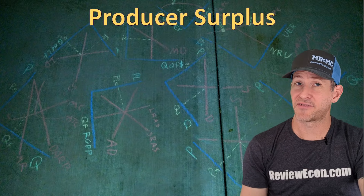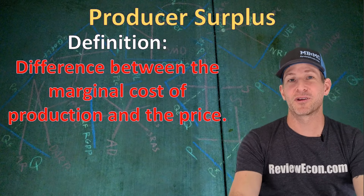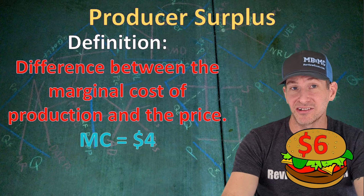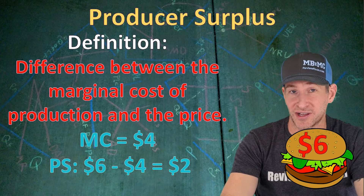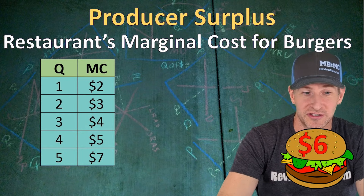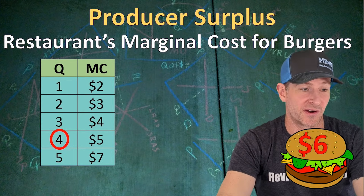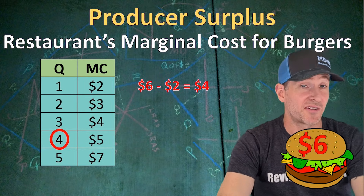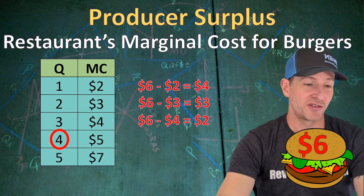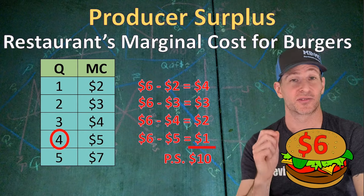Next, we're going to talk about producer surplus. The definition of producer surplus is the difference between the marginal cost of production and the price of the product. Using our $6 cheeseburger example: if the marginal cost is $4 and the producer sells it at $6, the difference is $2 of producer surplus for that cheeseburger. If that producer made multiple cheeseburgers, a table shows the marginal cost of each unit. Let's say the producer maximizes profit at four cheeseburgers: the first gives $4, the second $3, the third $2, and the fourth $1 of producer surplus — totaling $10.